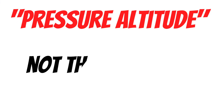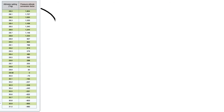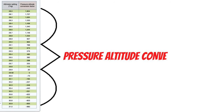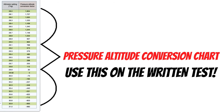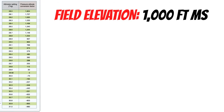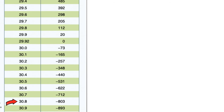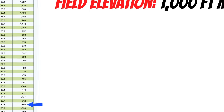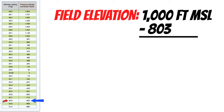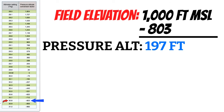This chart is another way to find your pressure altitude — it's called a pressure altitude conversion chart, and it's one of the easiest ways to calculate pressure altitude. On the written test, this method is what you need to use because it'll give you the best answer for the test questions. Sometimes you'll find this chart in the performance section of newer POHs too. For example, if the field elevation is 1,000 feet MSL and the altimeter setting is 30.80, we look up 30.80 and find the number next to it: negative 803 feet. Subtract 803 from 1,000 feet and our pressure altitude is 197 feet.